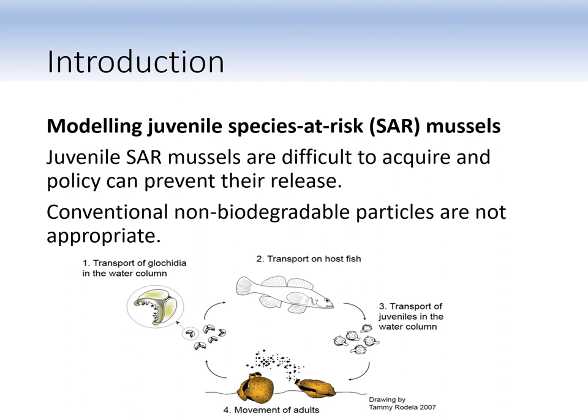For those of you who are less familiar with native unionid mussels or their life cycle, the illustration below depicts their life cycle. Male adult mussels release sperm into the water column which fertilizes the females. The fertilized females brood obligate parasitic larvae called glochidia on their gills. The glochidia are then eventually released onto the gills of their hosts, which are usually fish, and then the glochidia undergo metamorphosis on the gills of their host, eventually transforming into juvenile mussels that fall off onto the riverbed. Our lab has previously done some work on the transport of glochidia, whereas this work focuses specifically on the transport and settlement of juveniles.